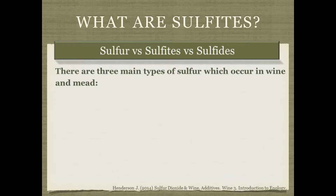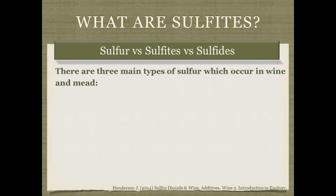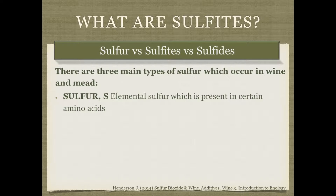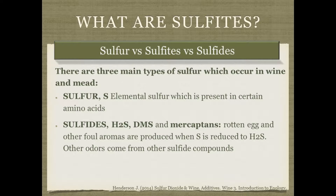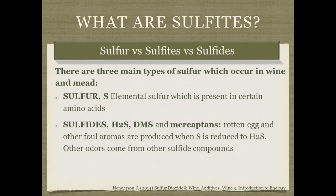There's sometimes confusion distinguishing sulfur versus sulfides versus sulfites — three main types of sulfur in wine and mead. Sulfur is the mineral element, found in certain amino acids. Sulfides — including hydrogen sulfide, dimethyl sulfide, and mercaptans — can add unpleasant aromas: hydrogen sulfide smells like rotten egg, while others suggest cooked vegetables, cooked cabbage, onions, garlic, or even hot asphalt. These are definitely not wanted. And then there are sulfites, which is what we'll be talking about in most of this presentation.